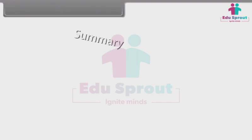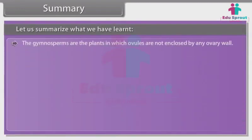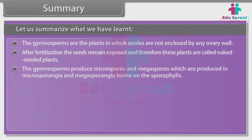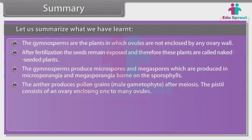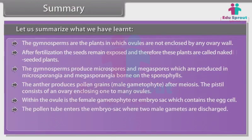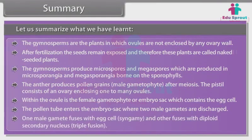Summary. The Gymnosperms are plants in which ovules are not enclosed by any ovary wall. After fertilization, the seeds remain exposed and therefore these plants are called naked-seeded plants. The Gymnosperms produce microspores and megaspores, which are produced in microsporangia and megasporangia borne on sporophylls. The anther produces pollen grains (male gametophyte) after meiosis. The pistil consists of an ovary enclosing one to many ovules. Within the ovule is the female gametophyte or embryo sack, which contains the egg cell. The pollen tube enters the embryo sack where two male gametes are discharged. One male gamete fuses with the egg cell and the other fuses with the diploid secondary nucleus — triple fusion.